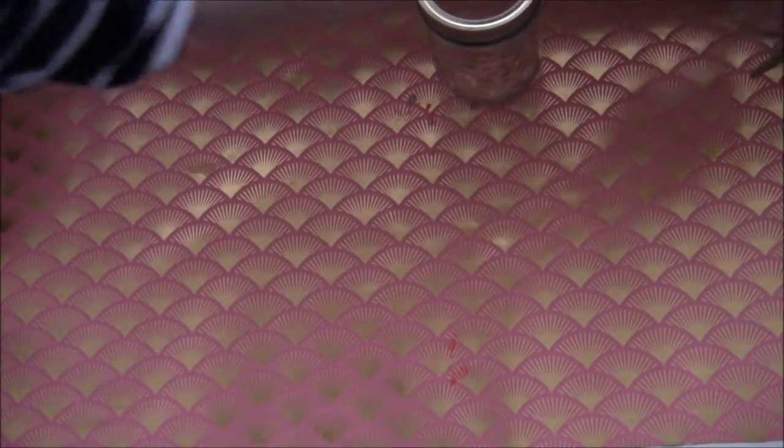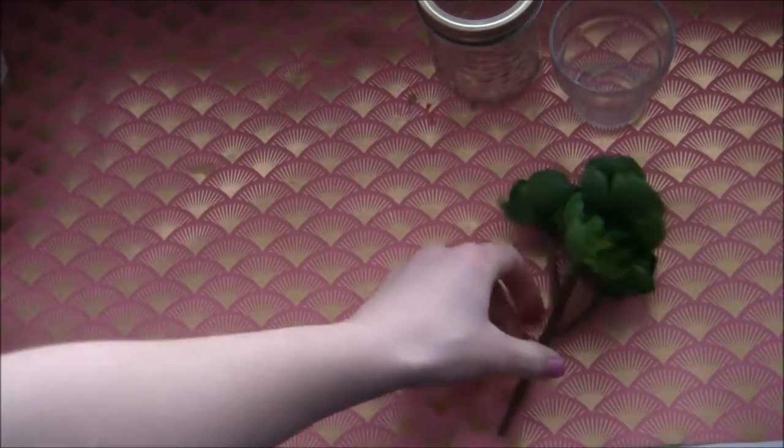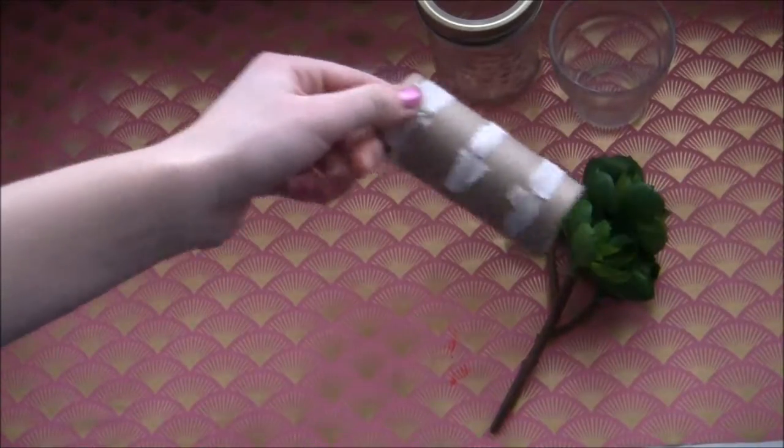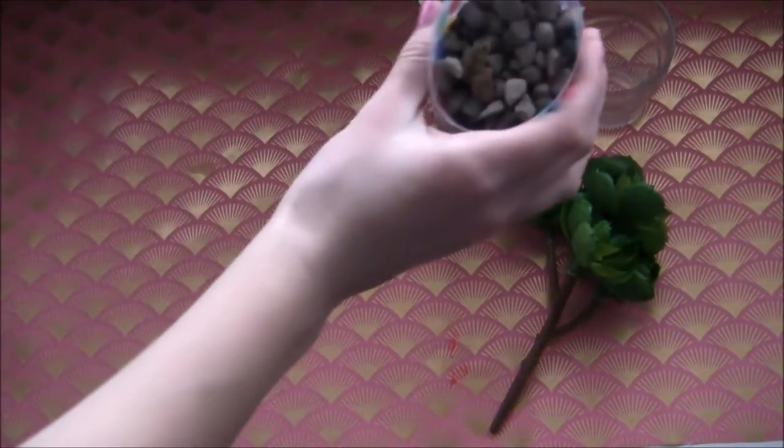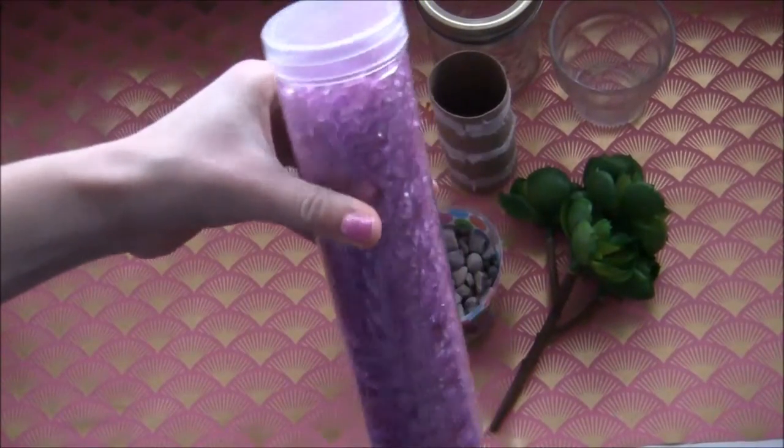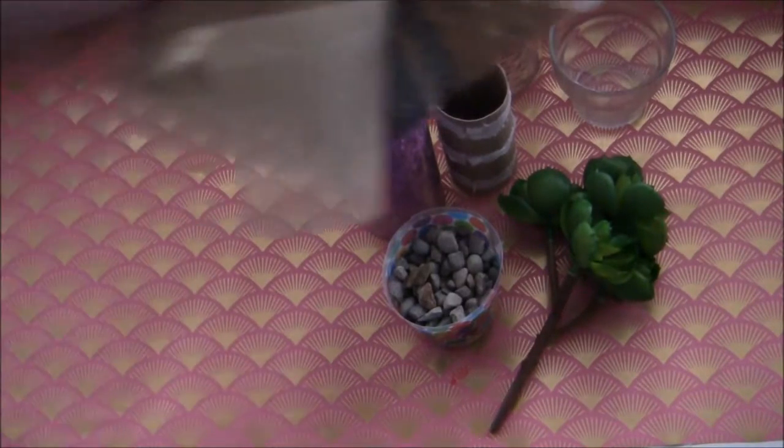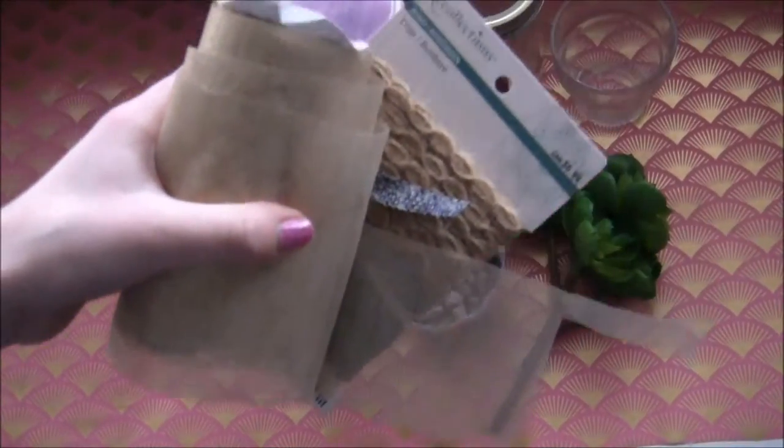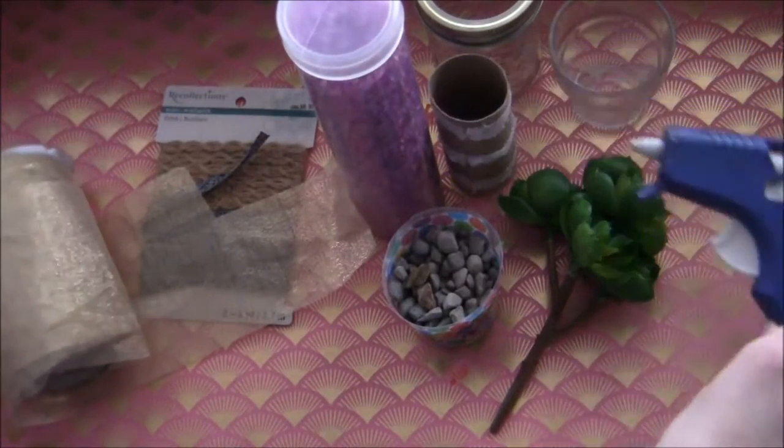To make this pretty piece of room decor, you will need an old jam jar or I'm also using this little glass pot, some fake succulents, an old toilet paper roll, some little rocks or I also found this glitter gravel. You will also need some ribbon or trim and some hot glue.